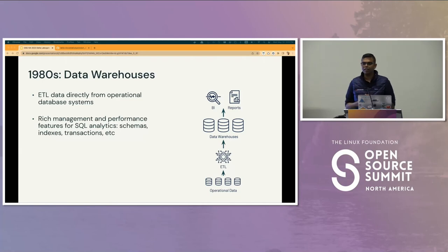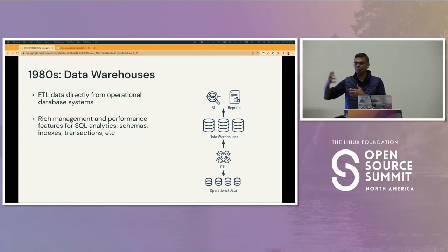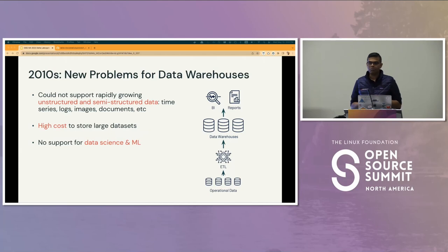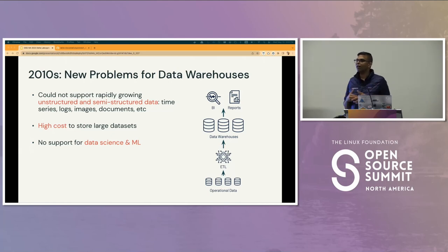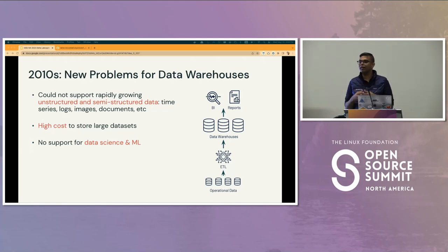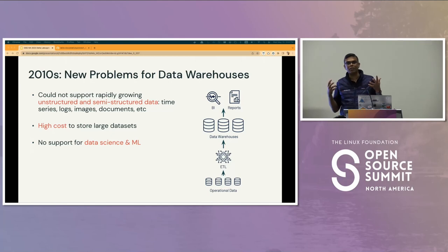A lot of today's analytical systems started out of data warehouses, which took off in the 80s. The idea was that you have operational data, you extract it, transform it, and load it to your warehouse, then do your data marts and analytics on top. This worked well for many years, but over the past decade challenges emerged. How do you train a model on unstructured data you have to store? Storage was costly because compute and storage were co-designed. And these systems were designed with SQL as the primary interface — making it hard to express advanced machine learning algorithms.